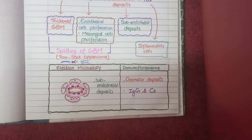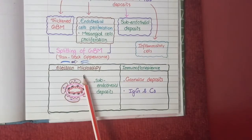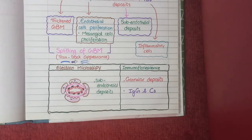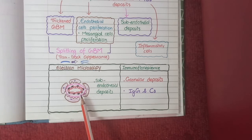On electron microscopy, as discussed in the pathogenesis, this disease results in formation of subendothelial deposits. On electron microscopy you will clearly see these subendothelial deposits, as visible in the diagram.